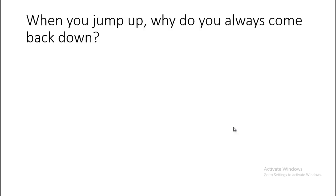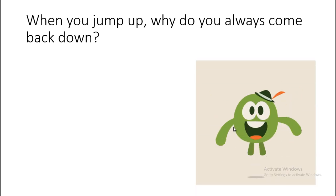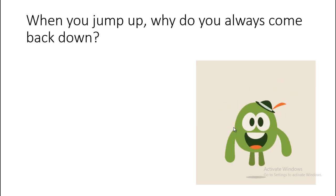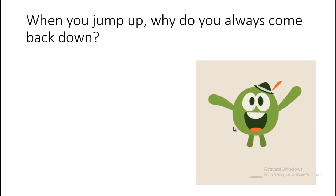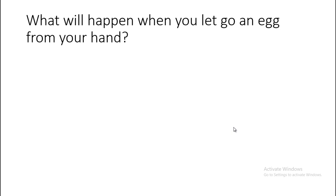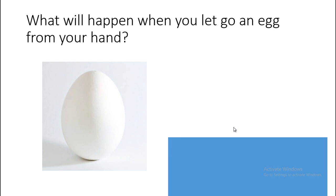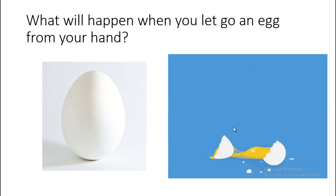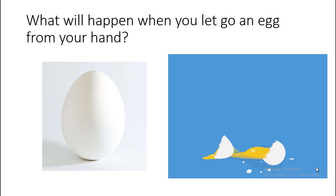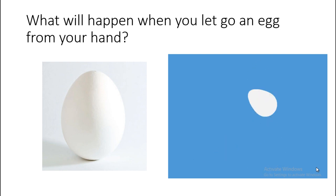Now, what will happen when you jump up? Why do you always come back down? What will happen when you let go of an egg from your hand — you have an egg in your hand and then you let it go. What's going to happen? It falls down and breaks. It moves fast down towards the earth and then it breaks. Why does everything move down?